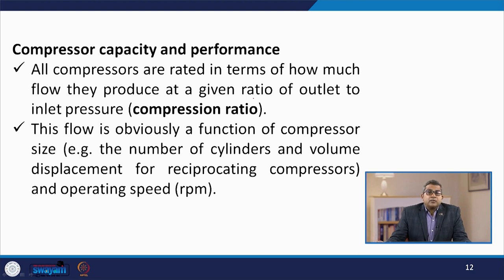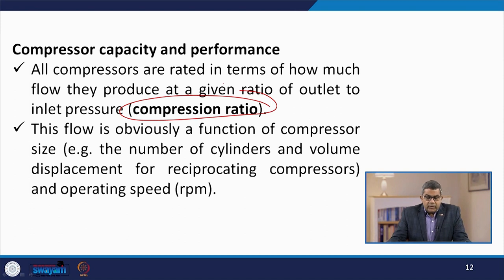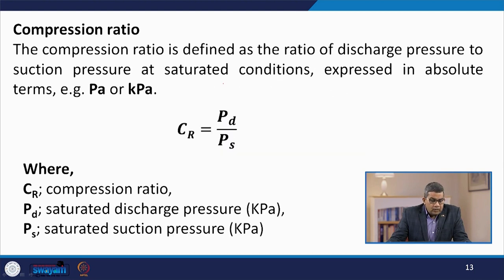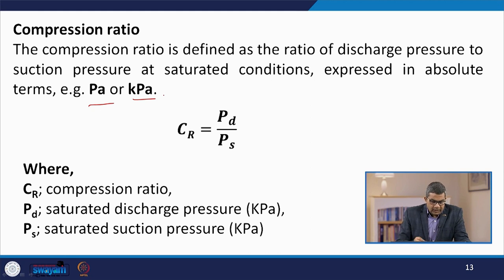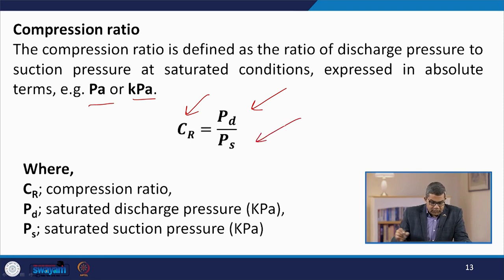Another prominent concept is compressor capacity and performance. All compressors are rated by the flow they produce at a given ratio of outlet to inlet pressure — the compression ratio. This flow is a function of compressor size (number of cylinders and volume displacement for reciprocating compressors) and operating speed in rpm. The compression ratio is defined as the ratio of discharge pressure to suction pressure at saturated conditions, expressed in absolute terms such as kPa: CR = P_D (kPa) / P_S (kPa).